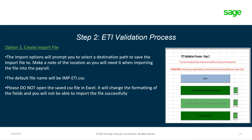The import options will prompt you to select the destination path to save the import file. Make sure that the file did save in this location. The default file name will be imp.eti.csv. Please do not open the saved file in Excel — it will change the formatting of the fields and you will not be able to import the file successfully.